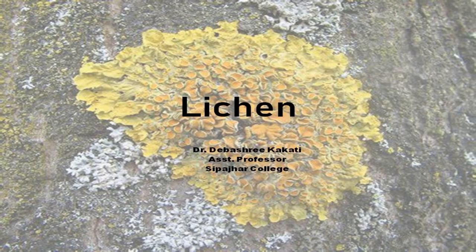The term lichen was coined by Theophrastus. Common phycobionts include Trebouxia, Protococcus, Cystococcus, Cladophora, Rivularia, and Gloeocapsa, which is a blue-green alga. The mycobiont may be Ascomycota, that is the sac fungi, or Basidiomycota, that is the club fungi.